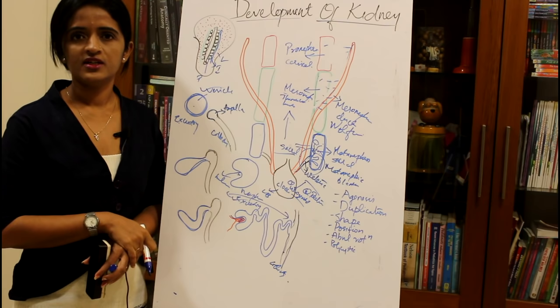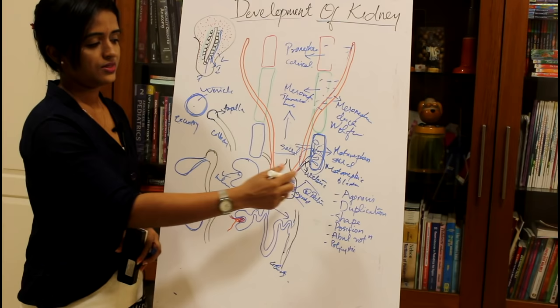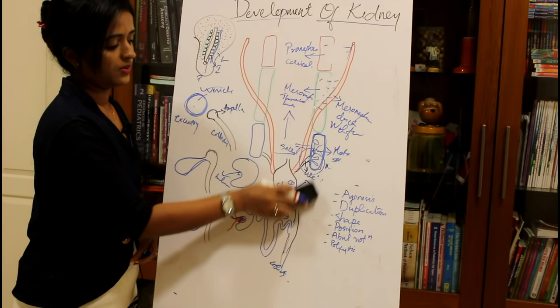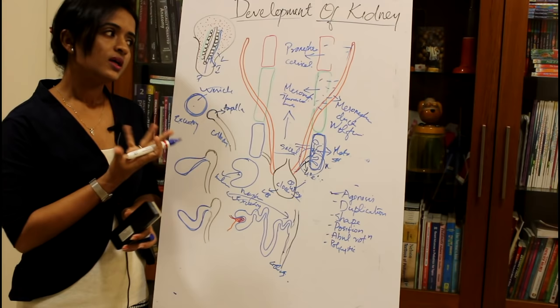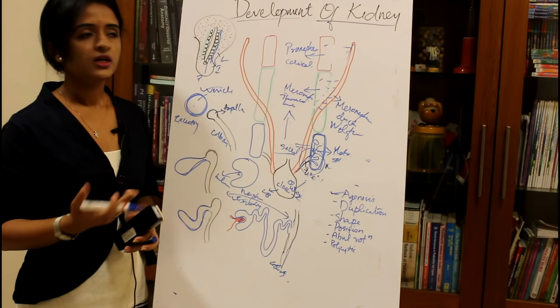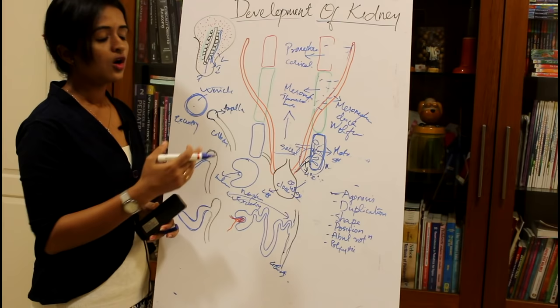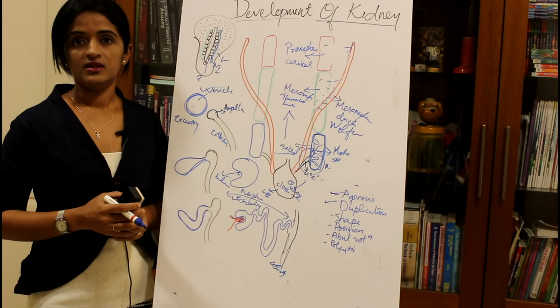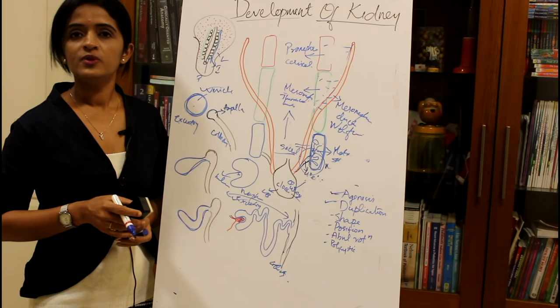When discussing developmental anomalies of the kidney, the first is agenesis — where the kidney may not develop, either unilaterally or bilaterally. There may also be hyperplasia. Another anomaly is duplication of the kidney, where instead of two kidneys an additional kidney is present on one side.